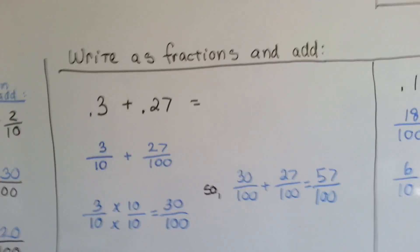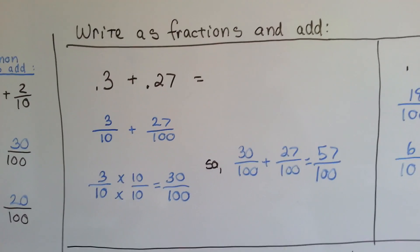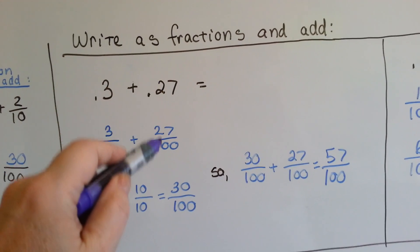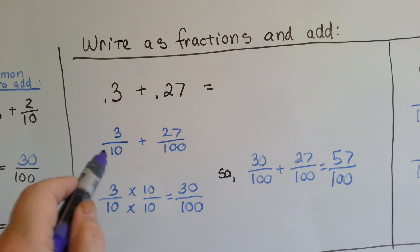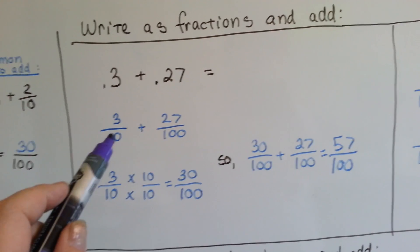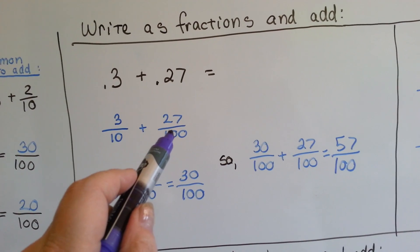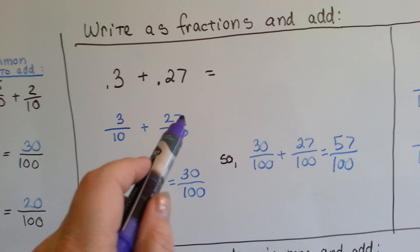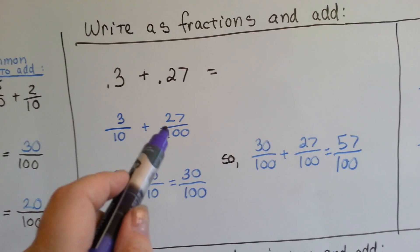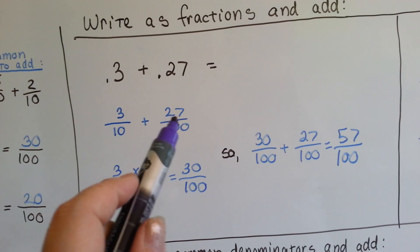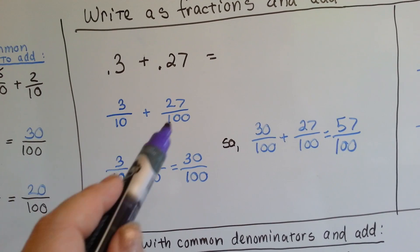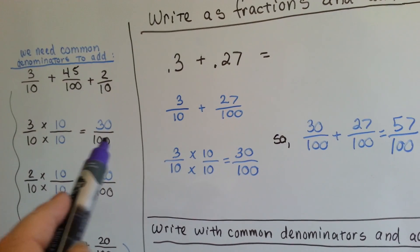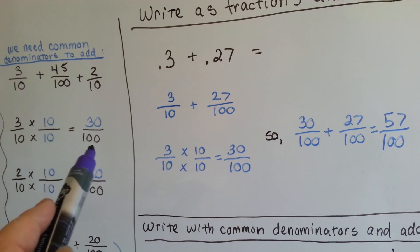If we are told to write decimals as fractions and add them, this is what we do. This is 3-tenths. This is 27 one-hundredths. We need the denominators to match, so the tenths needs to become one-hundredths. We can't make the hundredths into tenths because it's a two-digit numerator. So the 10 is going to become 100 by multiplying by 10, just like we did over here — the 3-tenths became 30 one-hundredths.